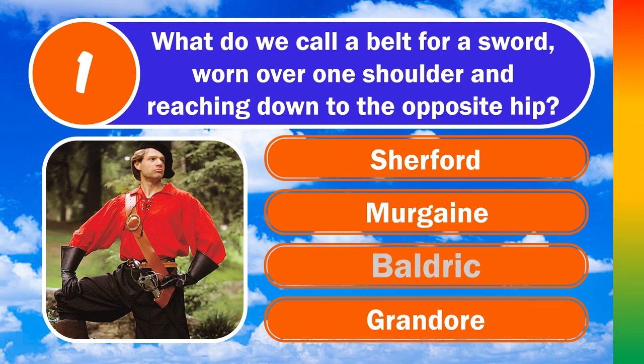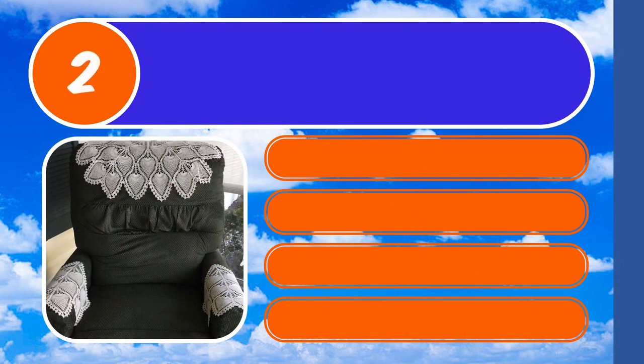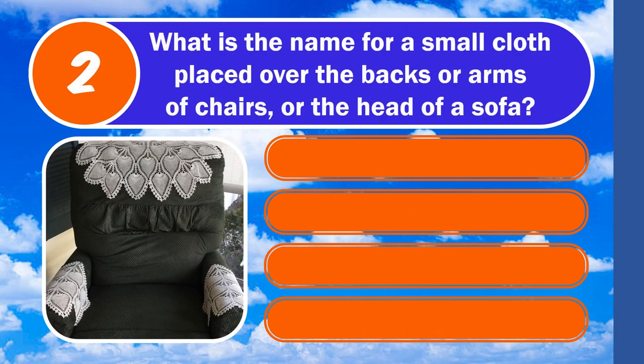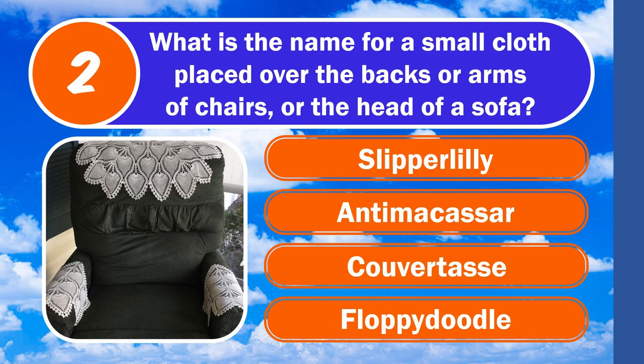The answer is Baldrick. Question two: what is the name for a small cloth placed over the backs or arms of chairs or the head of a sofa? Is it Slipper Lily, Anti-macassar, Cover Tass, or Floppy Doodle? The answer is anti-macassar.